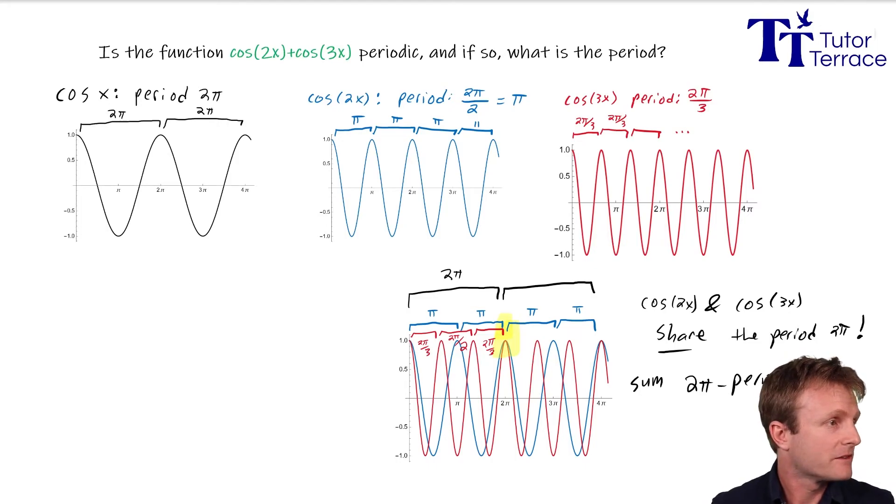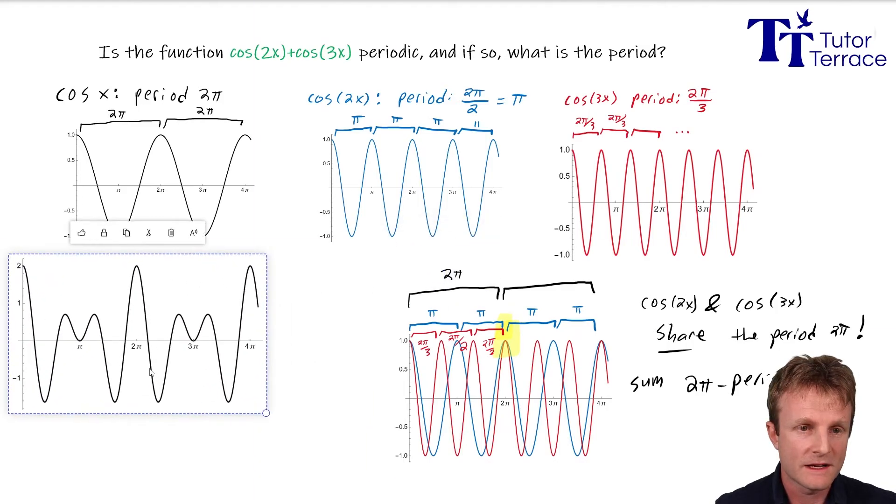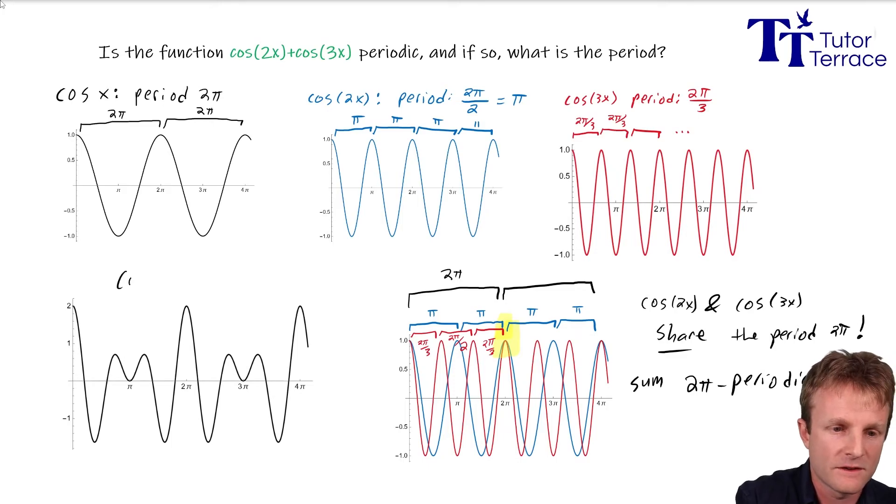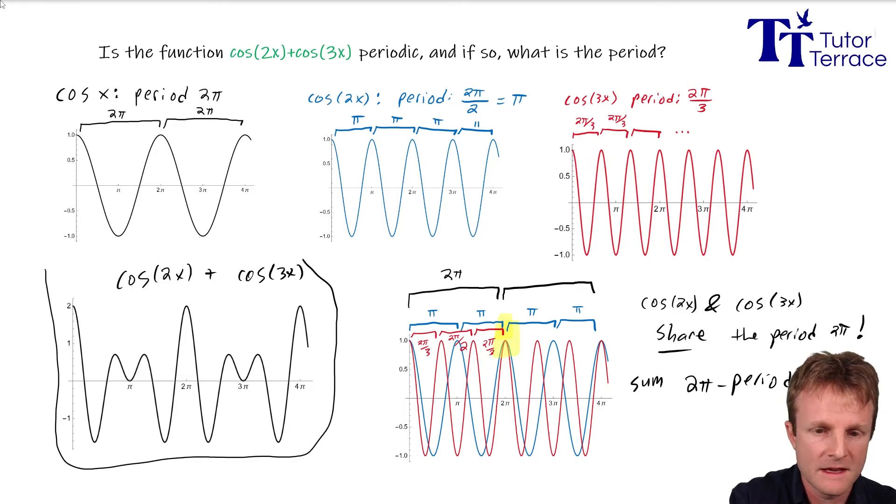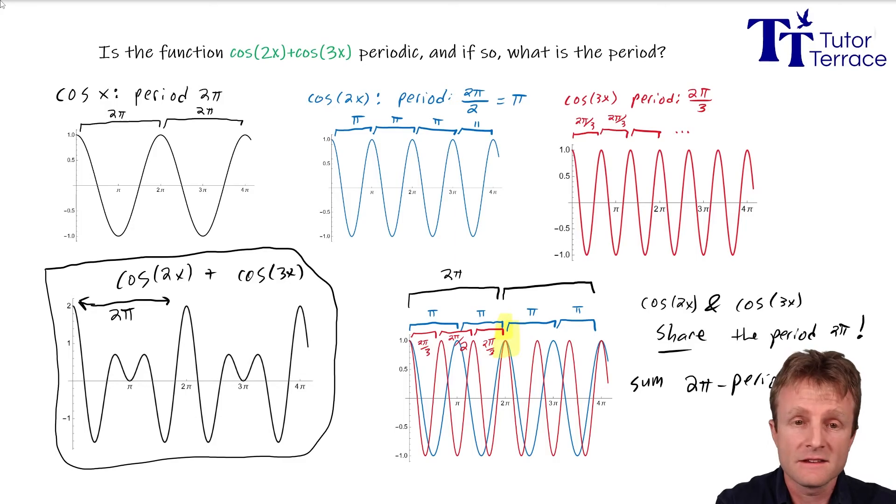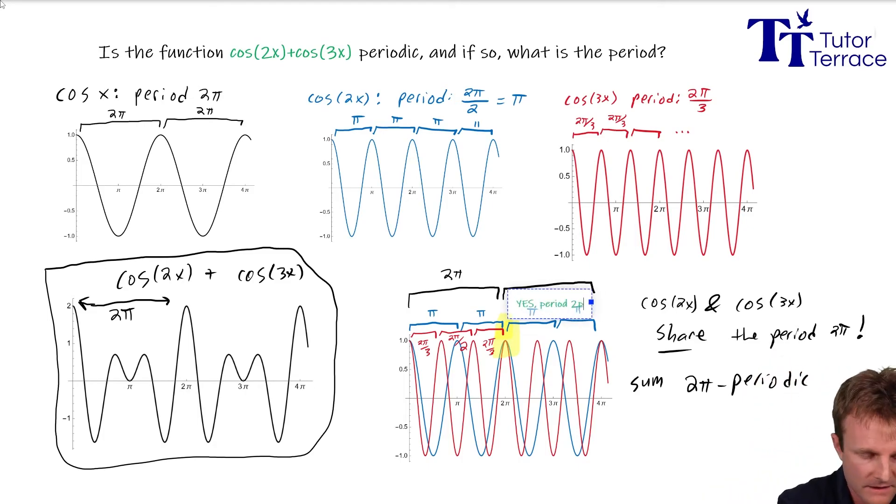And let's go ahead and make a plot to confirm. Here's the plot of the sum. This is cosine 2x plus cosine 3x. And look at that. We can see that it indeed has period 2π. Notice that it doesn't have period π. It doesn't have period 2π over 3. It only has period 2π, the shared period of the functions. And so the answer to this question is yes, period 2π.